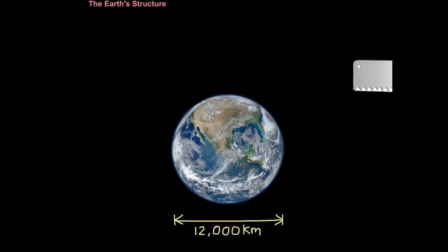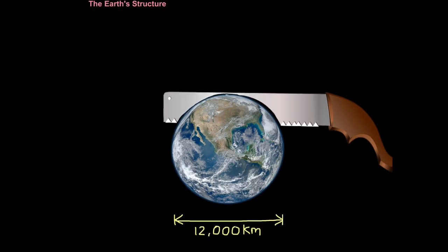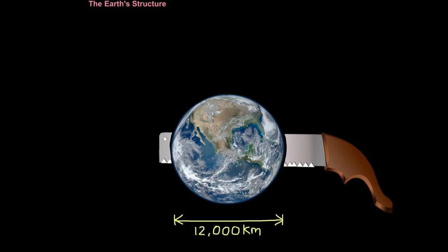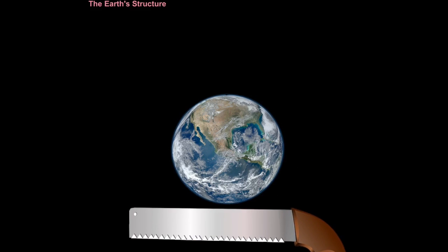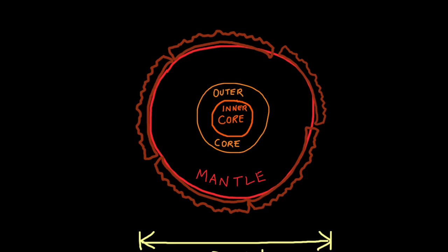But for us to understand that the earth is not a static system, it's always in a state of change, we need to look inside the earth. So we need to take a cross section through the earth.